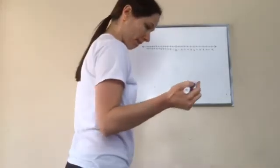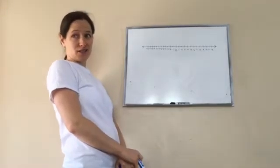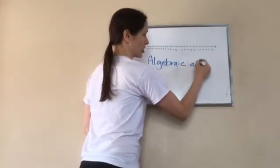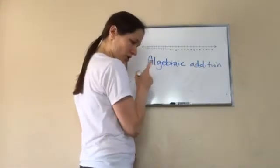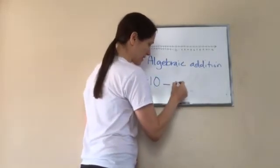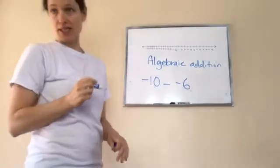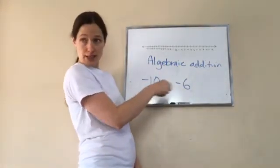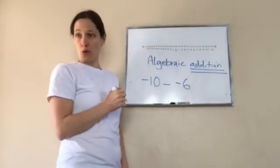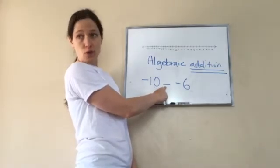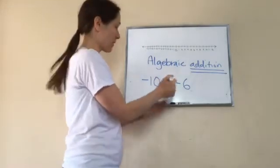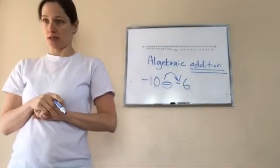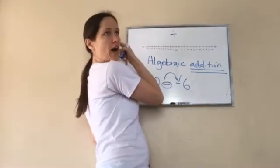This is going to get a little confusing when you're working with algebraic addition — that's the big word. Look at this problem: negative 10 minus a negative six. When you're doing integer stuff with negatives and positives, adding and subtracting, you always want to get them into addition form — and right now it's in subtraction form. So I want you to think of that subtraction sign as meaning 'the opposite of.'